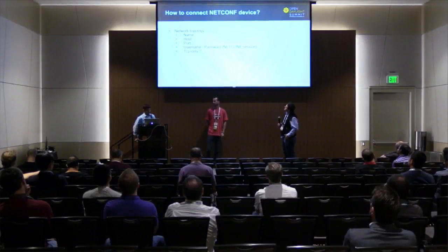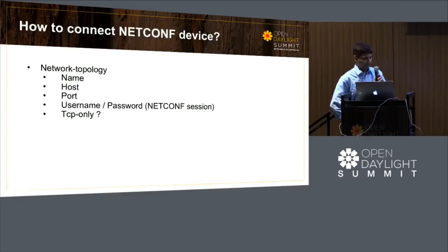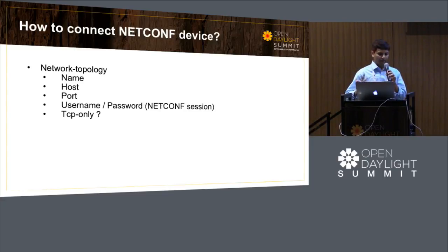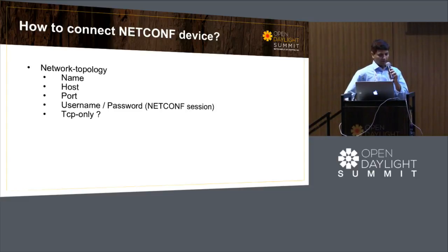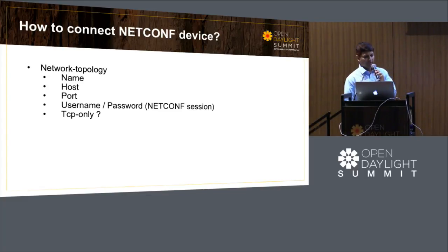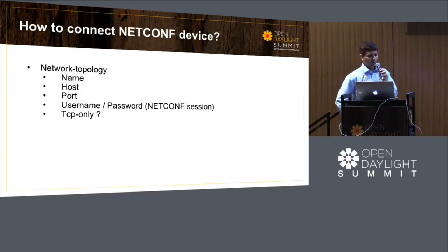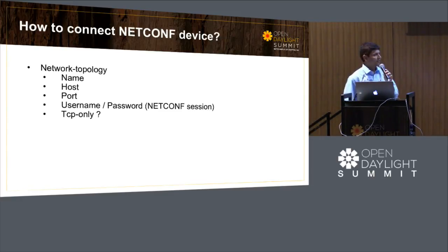The network topology way is a new way to mount and connect to the devices. The APIs are extremely simplified in the new way. If you've used the old way using the config subsystem loopback mechanism, the payload is extremely verbose and difficult to use. The whole mechanism is simplified a lot in the new network topology way, where you just have to provide the hostname, port number, username, and password. Those are the only required elements, and you don't need to worry about what broker it uses internally — all these things are hidden in the new API.